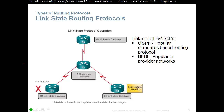Link state routing protocols: there are only two — OSPF and ISIS. OSPF is a popular standard-based routing protocol that you will be learning mainly in CCNA 2 and CCNA 3, with two chapters dedicated to it in CCNA 3. ISIS is popular in ISPs and is very similar to OSPF — once you understand OSPF, you will understand ISIS. However, ISIS is not covered in the CCNA topics.